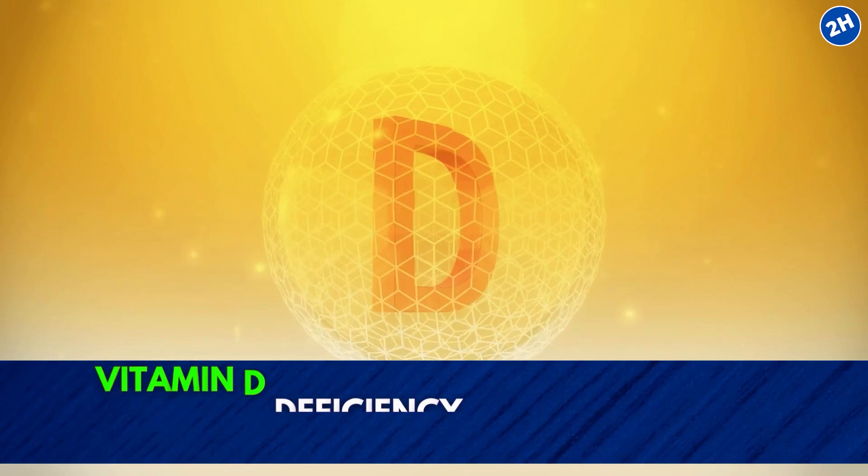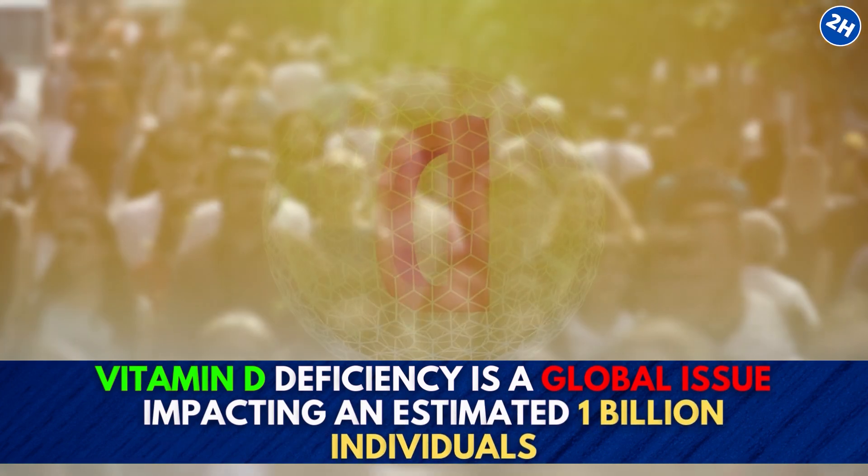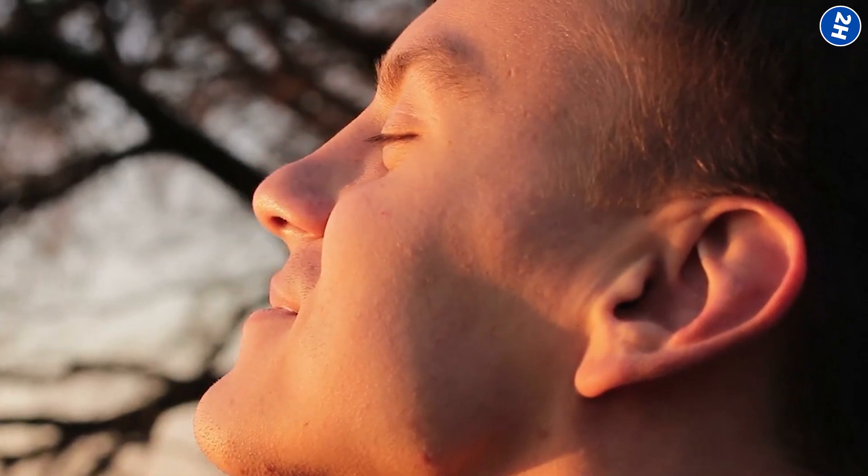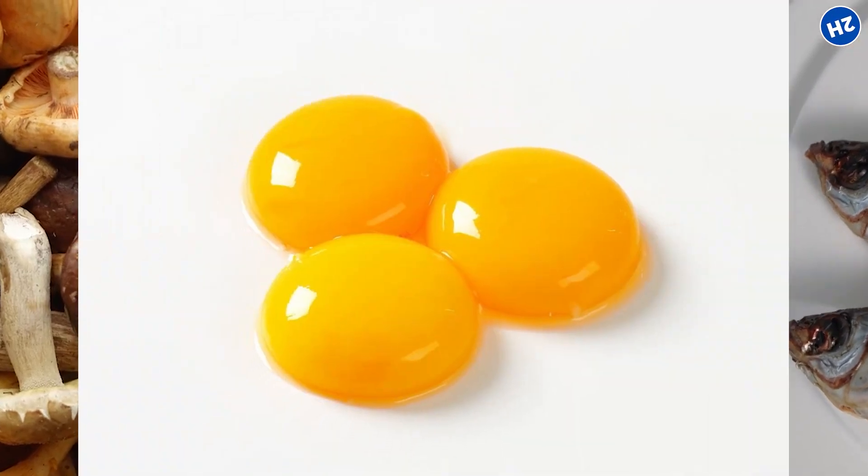Unfortunately, vitamin D deficiency is a global issue impacting an estimated 1 billion individuals. To prevent its deficiency, spend some time in sunlight and eat foods like fatty fish, mushrooms, and egg yolk.